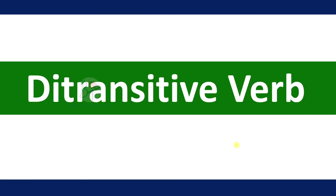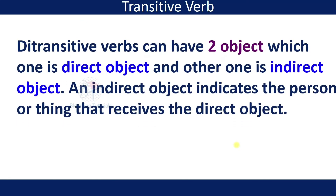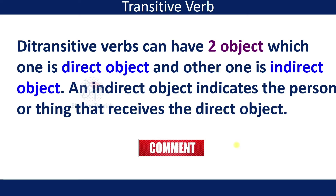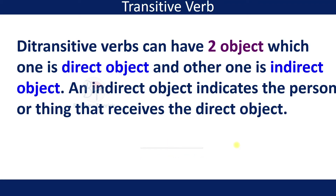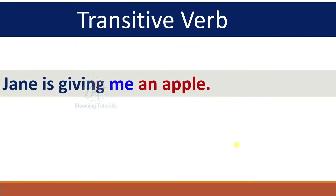Ditransitive verbs can have two objects: one is the direct object and the other is the indirect object. An indirect object indicates the person or thing that receives the direct object. For example, 'Jane is giving me an apple.' Jane is giving what? An apple — that is the direct object. To whom? Me — 'me' is the indirect object.